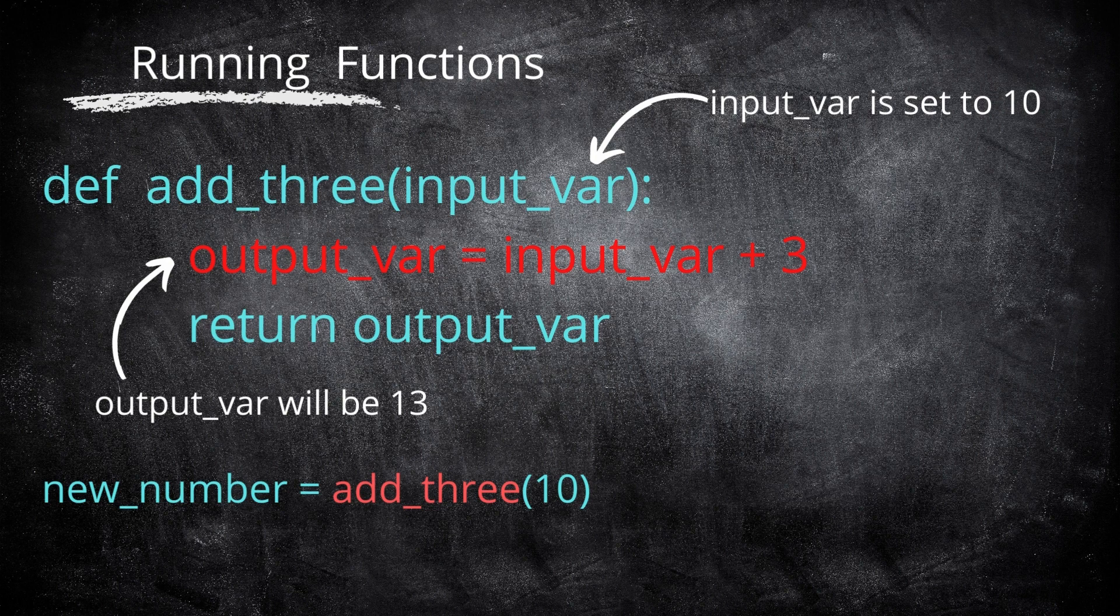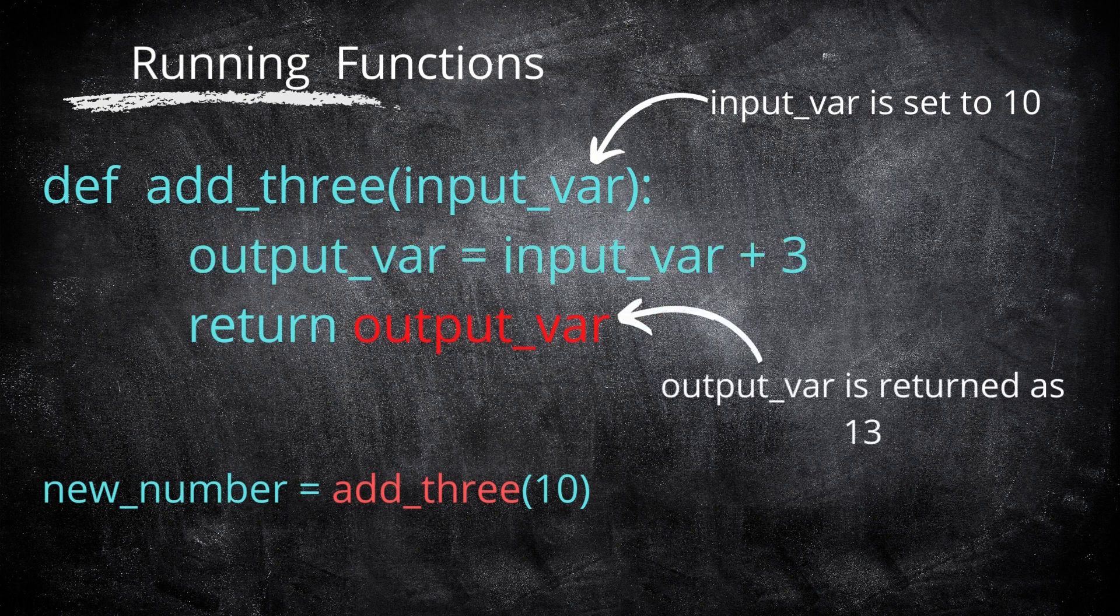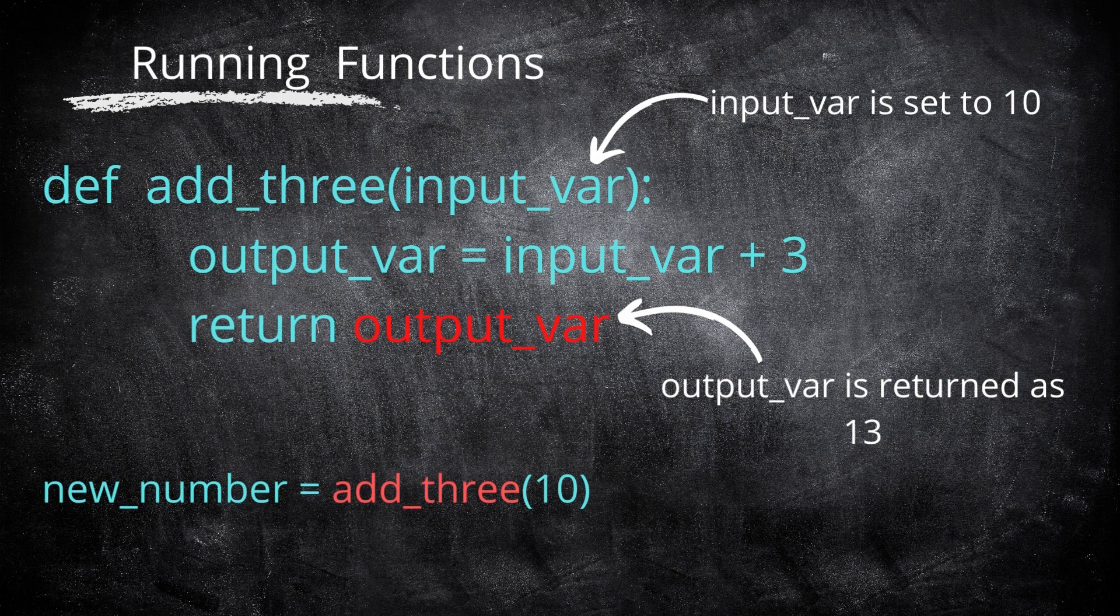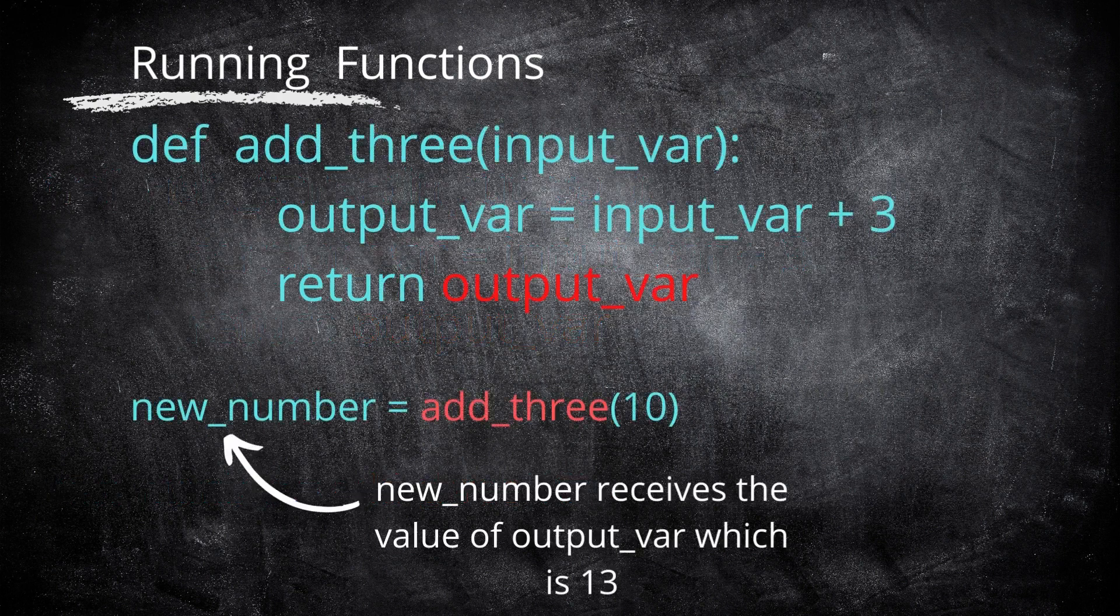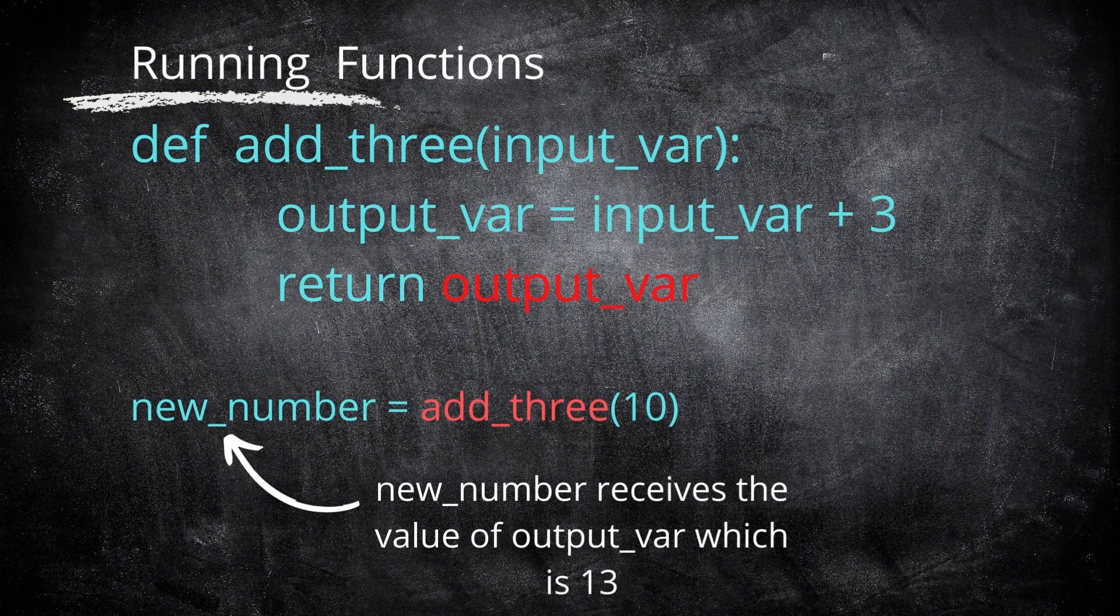The final line of the code is then a return statement which returns the value of output_var which at this point is 13. By setting new_number = add3(10), we set new_number = 13. I'll see you next time.